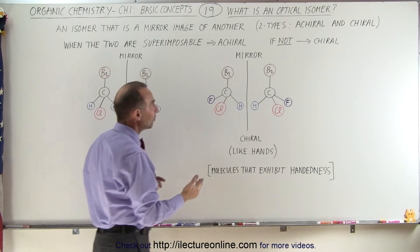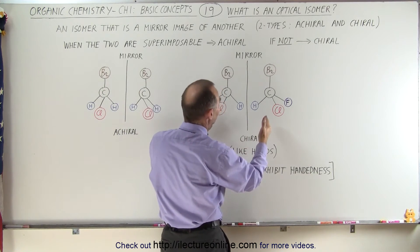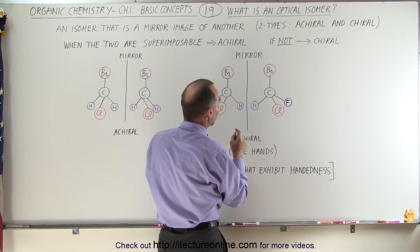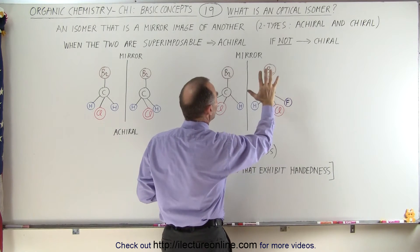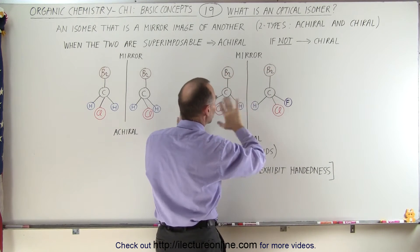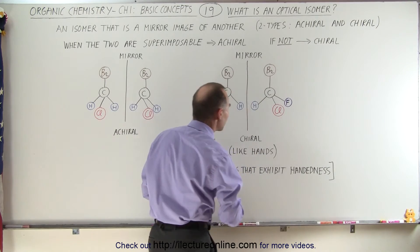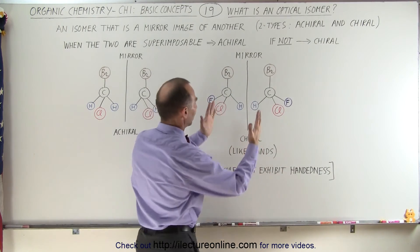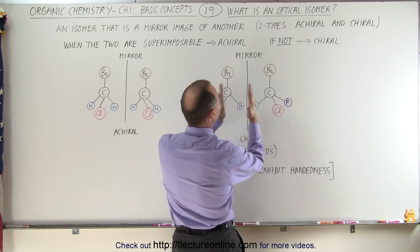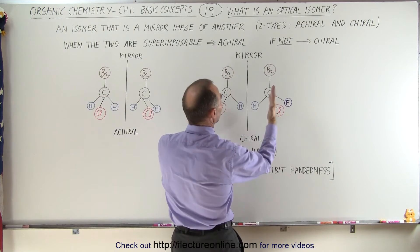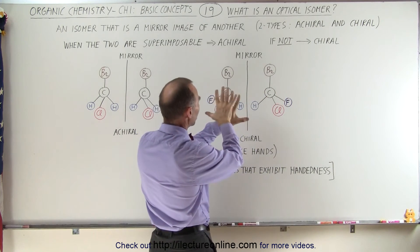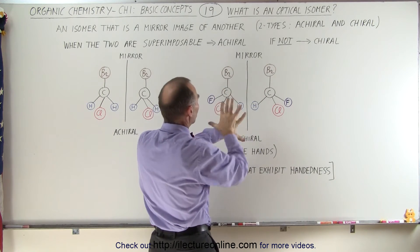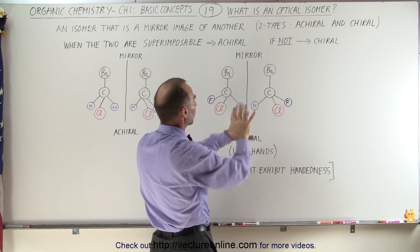But in this case, you can see that yes, yet again, there are mirror images of one another, except you cannot superimpose this molecule onto the other. They don't look the same, just like the hands of a human body. If I take these like this, you can see that they're mirror images of each other. But if I take the two hands and put them on top of each other, they don't look the same.